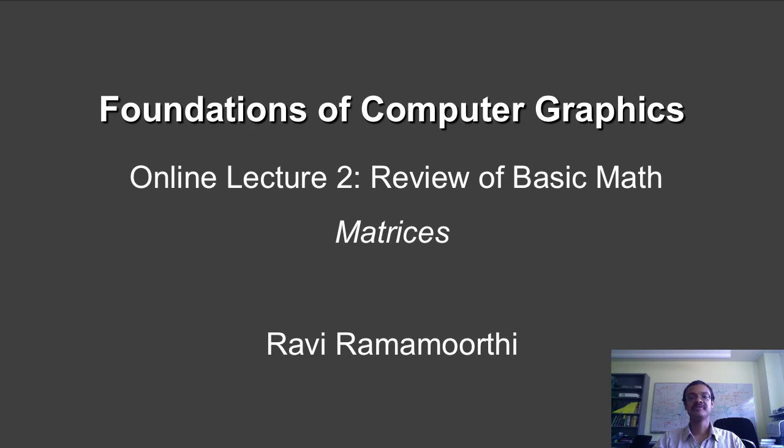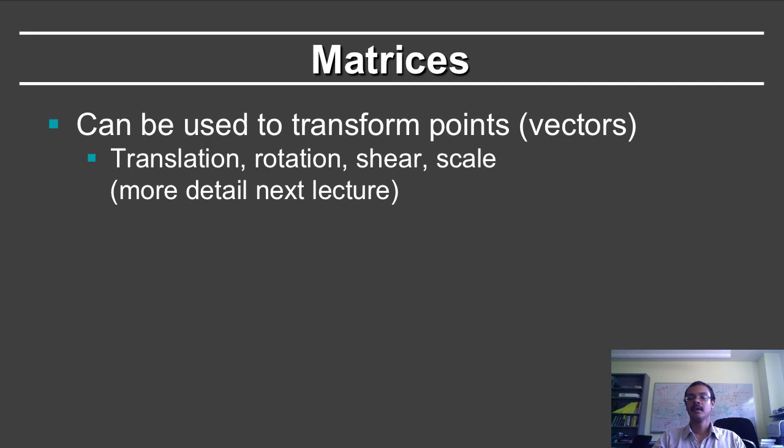In the previous segments, we have studied various aspects of vectors. In this segment, we will talk about matrices, which are also very important. Most transformations involve a matrix multiplying a vector. Matrices can be used to transform points. The next few lectures will talk about their use for translations, rotations, shears, scales. In fact, all transformations in the graphics pipeline are handled by matrices.